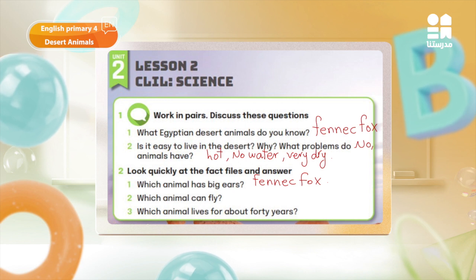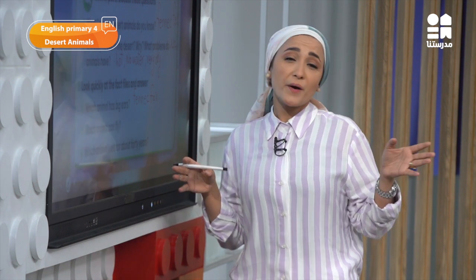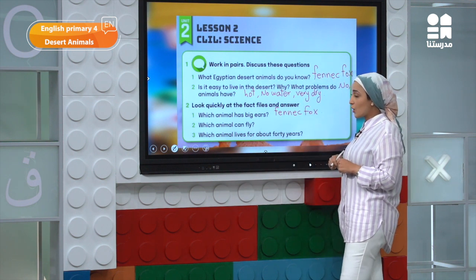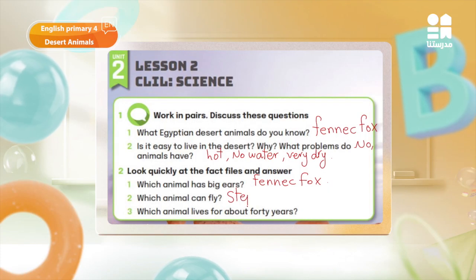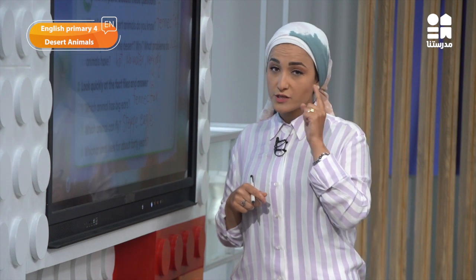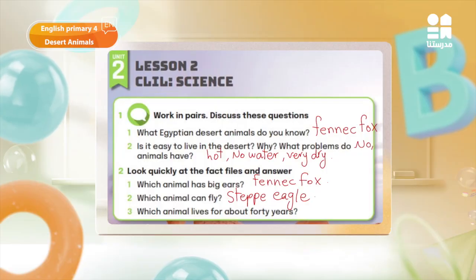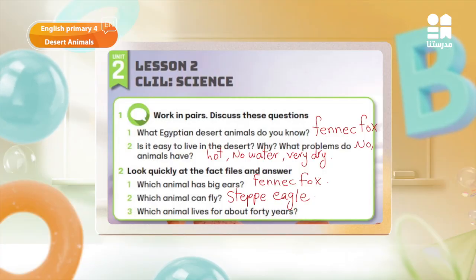Number two: which animal can fly in the desert with very strong and big wings? Is it a bird? Not a parrot — the desert needs a very strong animal to live there. The steppe eagle. Very good — the steppe eagle is very strong with very strong vision. Number three: which animal lives for about 40 years? Go back to the fact file about the steppe eagle — the steppe eagle lives for about 40 years.